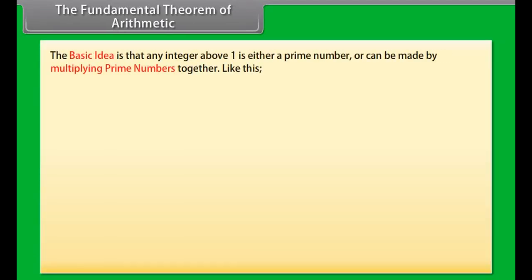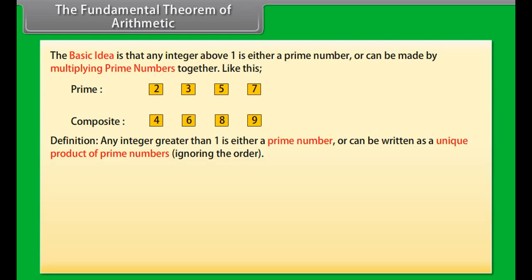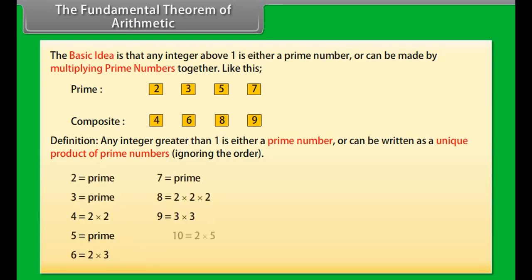The Fundamental Theorem of Arithmetic: The basic idea is that any integer above 1 is either a prime number or can be made by multiplying prime numbers together. Any integer greater than 1 is either a prime number or can be written as a unique product of prime numbers, ignoring the order.